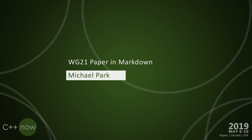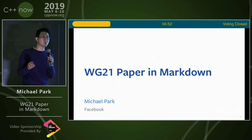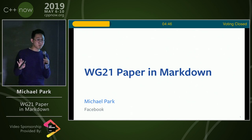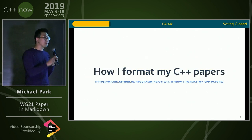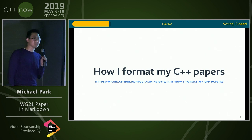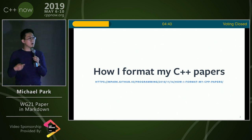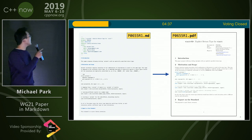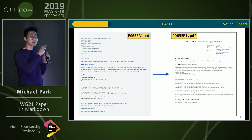My name is Michael Park. I work at Facebook. This is WG21 paper in Markdown. This talk is for those of you who write C++ proposals who are not happy with your current setup. If you're happy with your current setup, keep doing your thing. I wrote a blog post about how I format my C++ papers, and this is a follow-up to that. I want to write simple Markdown but still get professional-looking LaTeX-ish generated PDF files.